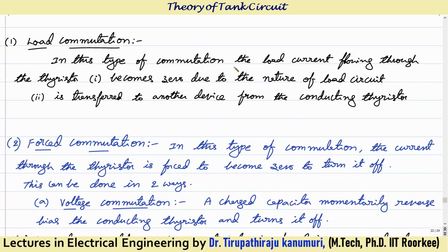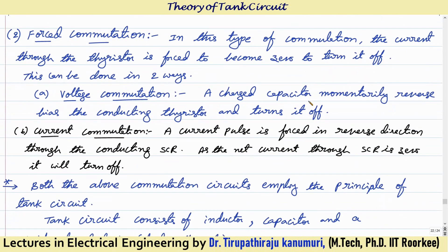In load commutation, the name itself tells us the load has the characteristic to do the commutation — that means to decrease the current below that level and reverse bias the thyristor for some time. In this type of commutation, the load current through the thyristor becomes zero due to the nature of the load circuit, or it is transferred to another device from the conducting thyristor. The current is bypassed through another thyristor so the current through the conducting thyristor becomes zero and it turns off. Load commutation will be discussed in coming lectures in detail.